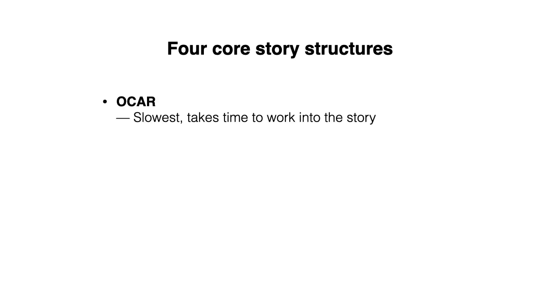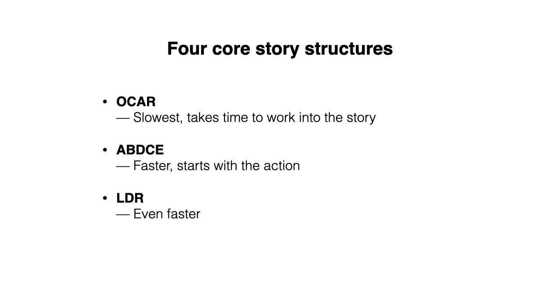Of course, there are many ways that we can structure a story, but here we're going to identify four core story structures. The first is OKAR, which is the slowest — it takes time to work into the story. The second is ABDCE, which is faster; it starts with the action. LDR is even faster. And LD is the fastest, with the whole story up front.